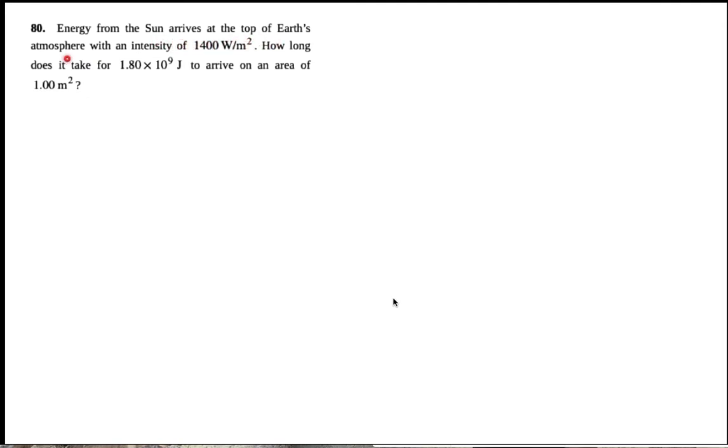Energy from the Sun arrives at the top of Earth's atmosphere with an intensity of 1400 watts per meter squared. How long does it take for 1.8 times 10 to the 9 joules to arrive in an area of 1 meter squared?